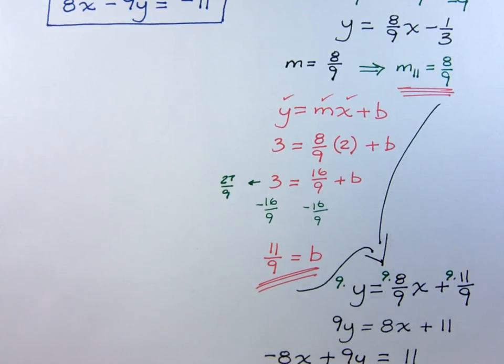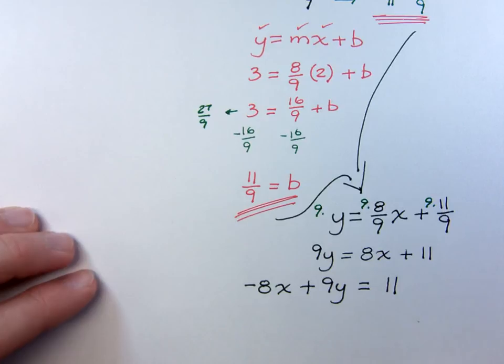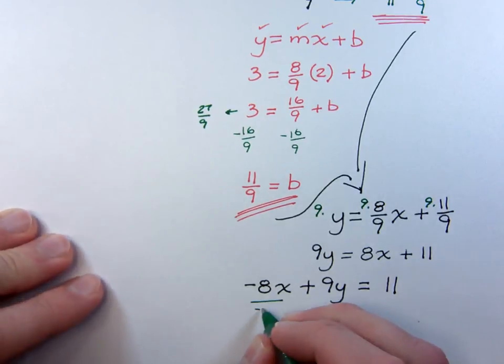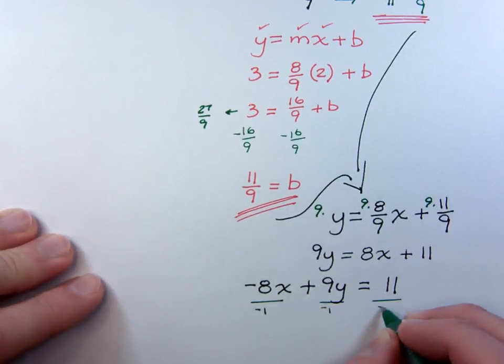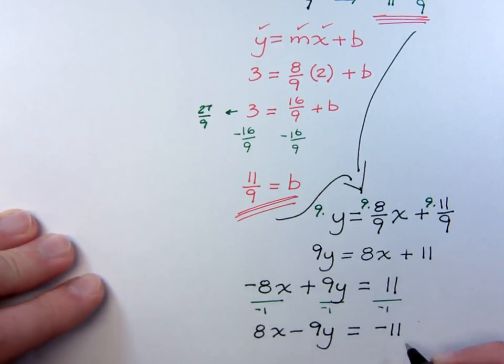No, they are not exactly the same, but they do represent the same thing. Because on this guy right here, if I divide everything by a negative 1, then I end up with 8x minus 9y is equal to negative 11.